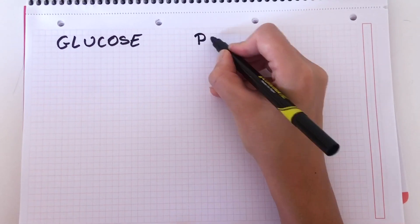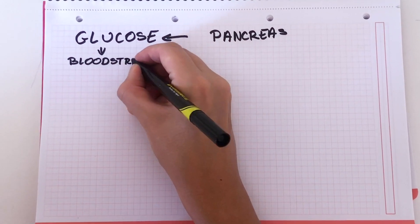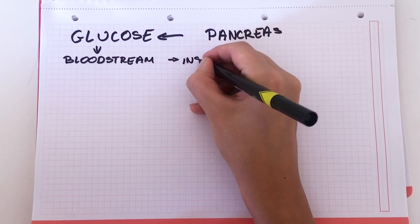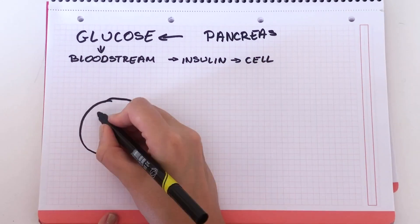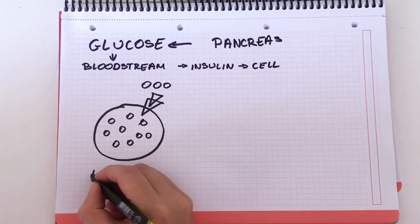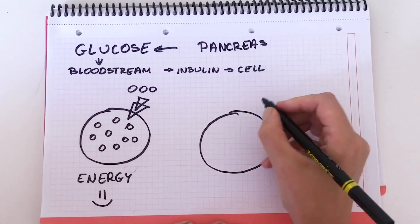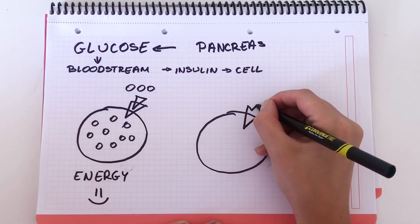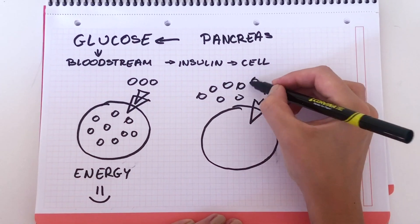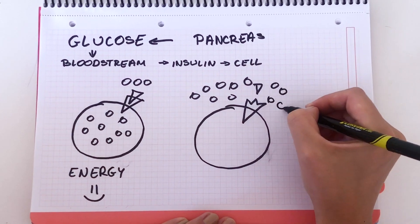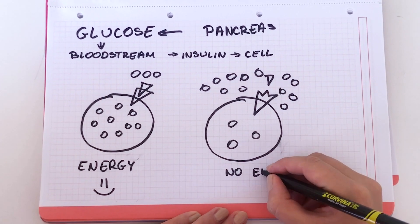Now let's go back a bit. Our pancreas creates glucose, which goes into the bloodstream, and then the pancreas has to create enough insulin. But what happens in our energy-creating muscle cells? In a healthy person, the key and lock fit together, so glucose comes in and we have energy. But in someone with insulin resistance, the insulin doesn't open the lock, so glucose cannot go inside and create energy. The person, even though they ate a lot, is still hungry. And if they ate just a little bit, the energy cannot go into the cell — so it goes somewhere else.